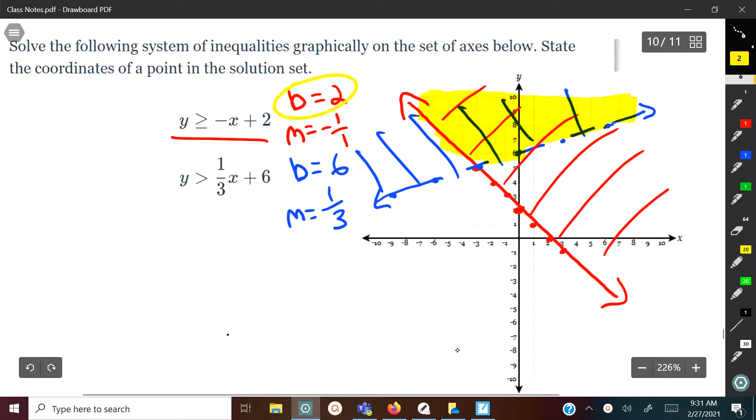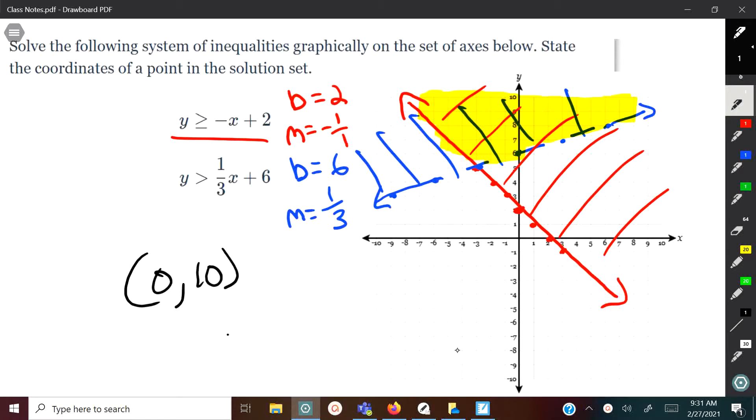So first I got my slope and y intercept for the first one and when I hand graph it, and since it is equal to, I drew a solid line and went above, greater than it because it's greater than it. And then here, I got my slope and y intercept and graph this line. And because it's not equal to, I use a dash. And then I shade it in where it overlaps here. And I can pick any solution here. Let's say I pick 10, this 10 here, that'll be x is zero and y is 10. But any solution would work there, just in that yellow region.